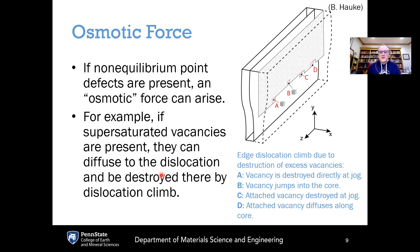The second type of force that can be the driving force for dislocation motion is called the osmotic force, also known as the chemical force. The osmotic force results from any non-equilibrium concentration of vacancies near the dislocation itself. We can get the equilibrium concentration of vacancies from the equilibrium constant of the defect reactions that create those vacancies. If locally around the dislocation the concentration of vacancies is out of equilibrium — either too many or not enough — then that presents a local chemical force known as the osmotic force that seeks to equilibrate that local concentration of vacancies.